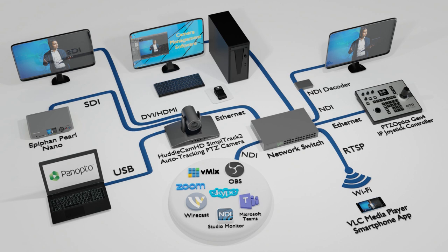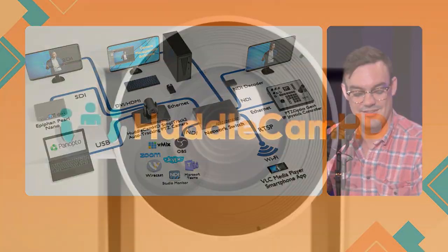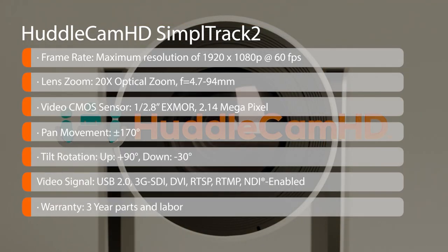An NDI decoder gives you the capability of taking the NDI video from the camera and showing it over your network, decoding it to HDMI. If you have a monitor in your classroom or an overflow room where you want to show what the camera is doing at a remote location on your network, that's a really cool option. This diagram shows all the possibilities of the Simple Track 2 in use.